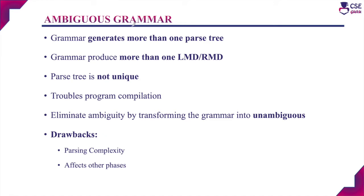The grammar is said to be ambiguous if it generates more than one parse tree. That is, the grammar cannot produce a unique parse tree. Even if the grammar derives more than one leftmost derivation or more than one rightmost derivation, then that grammar is also an ambiguous grammar.